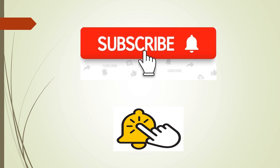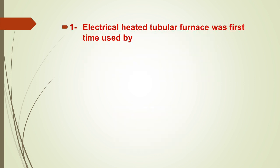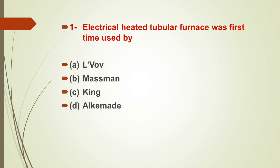Here is the first MCQ: the electrically heated tubular furnace was first used by — options are: A) Wolf, B) Massman, C) King, D) L'vov. The right answer is C, that is King. The electrically heated tubular furnace was first used by King.